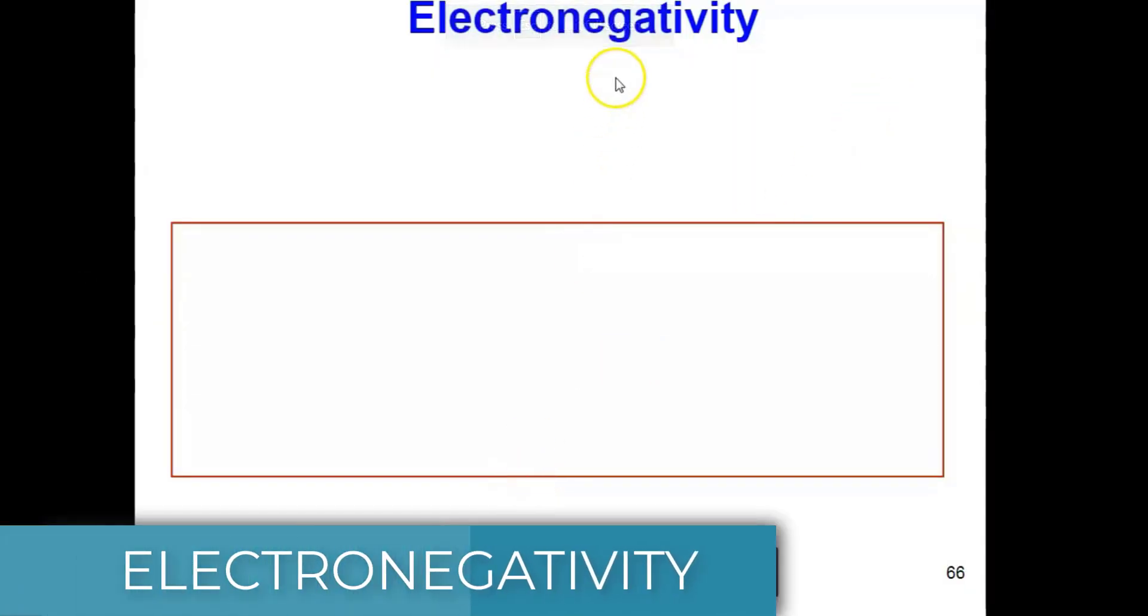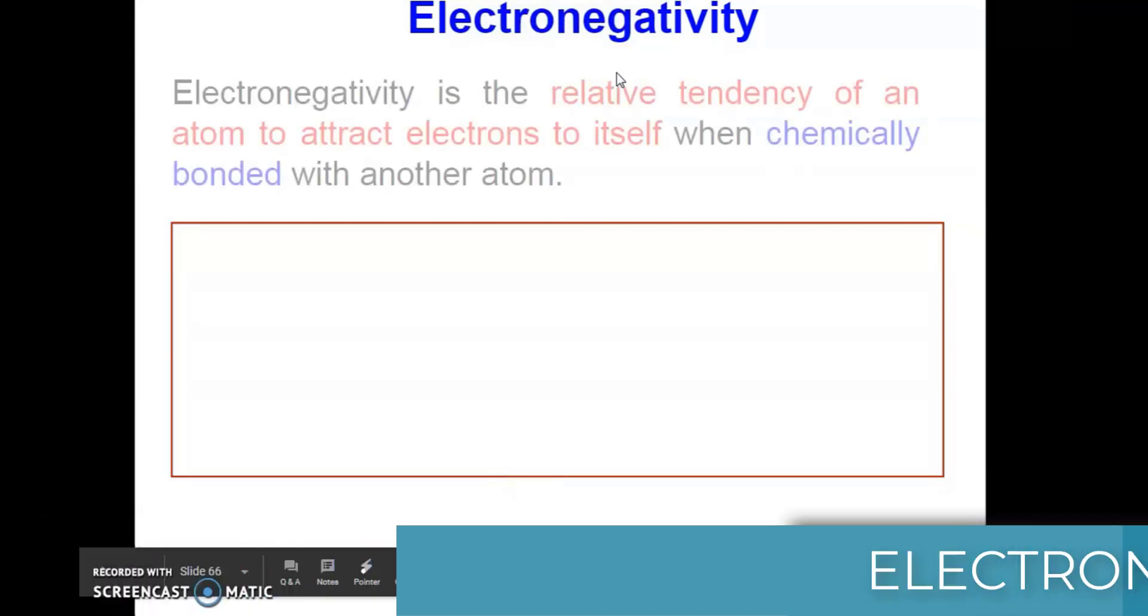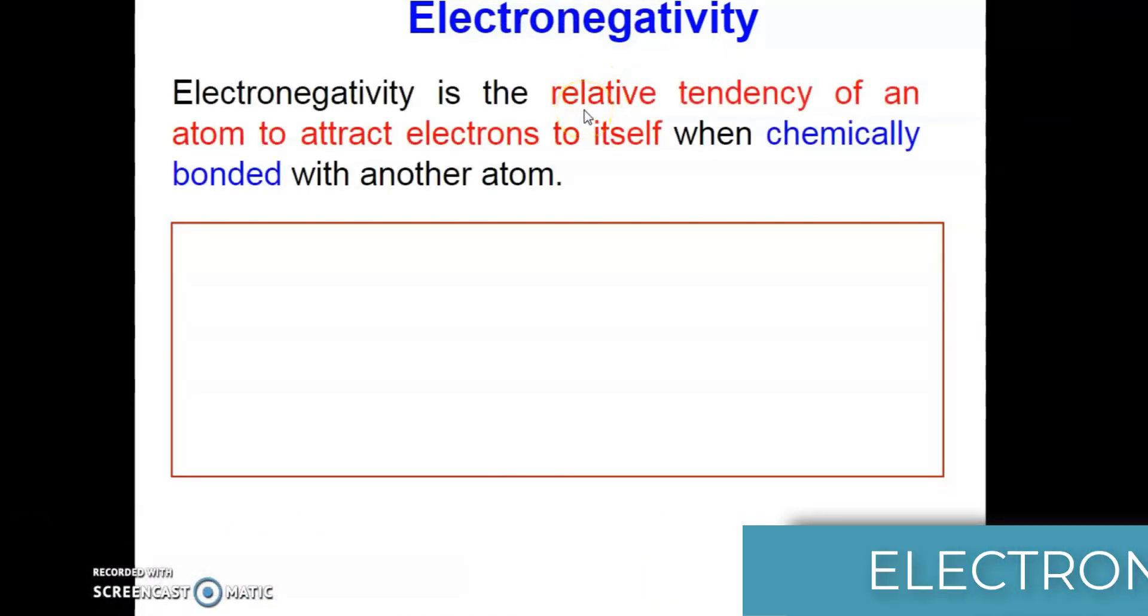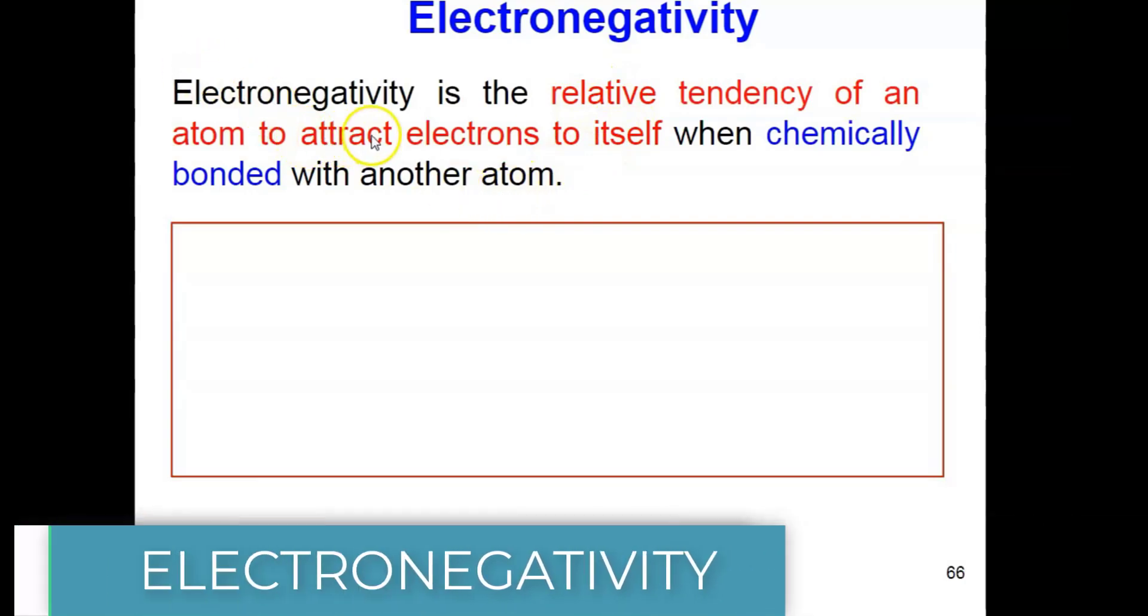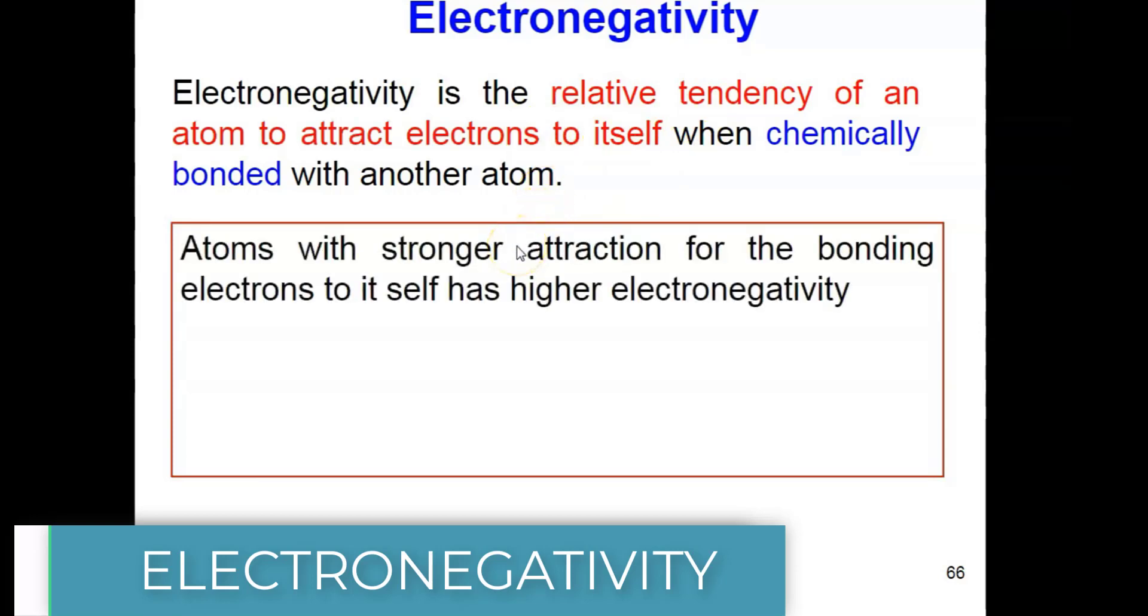In the next part of this video, we are going to learn about electronegativity. The definition for electronegativity is the relative tendency of an atom to attract electrons to itself when chemically bonded with another atom.